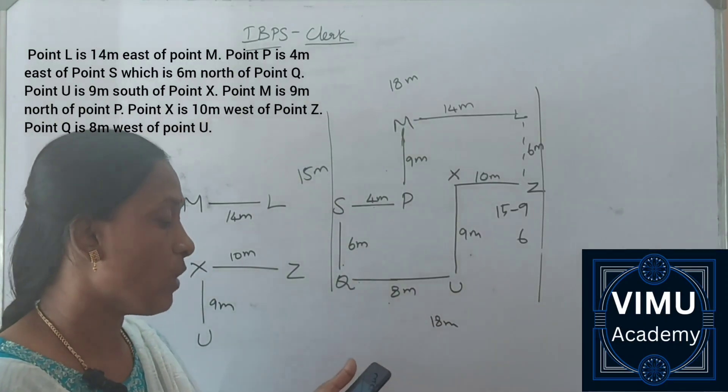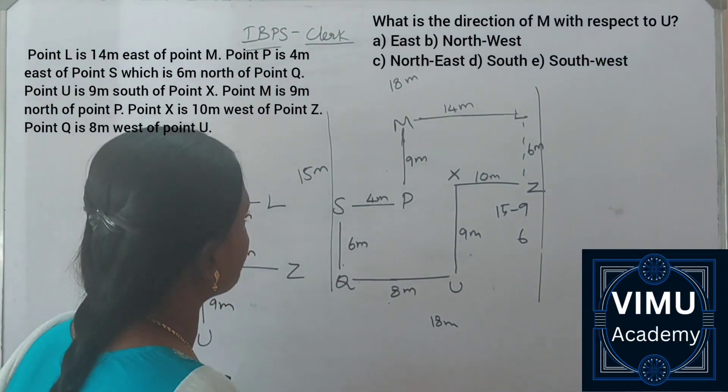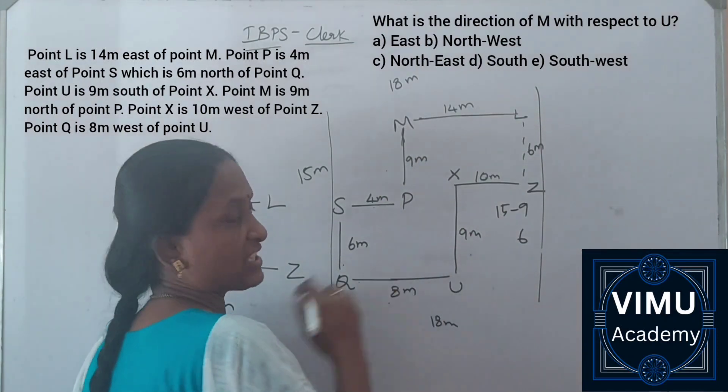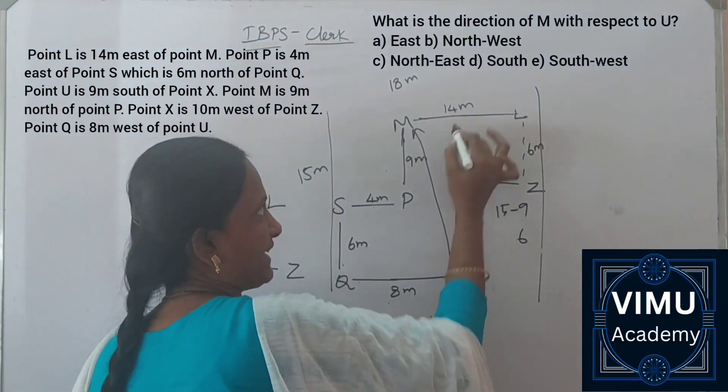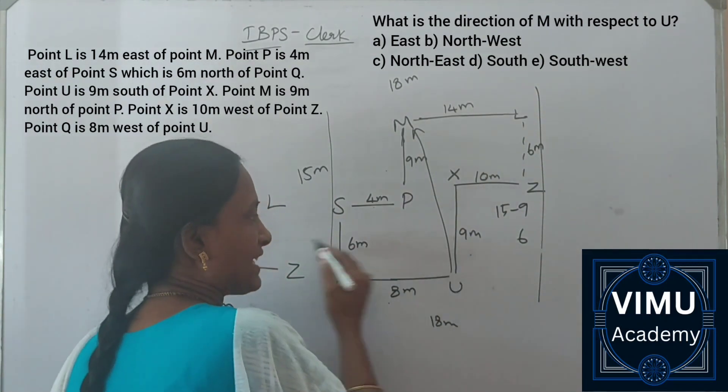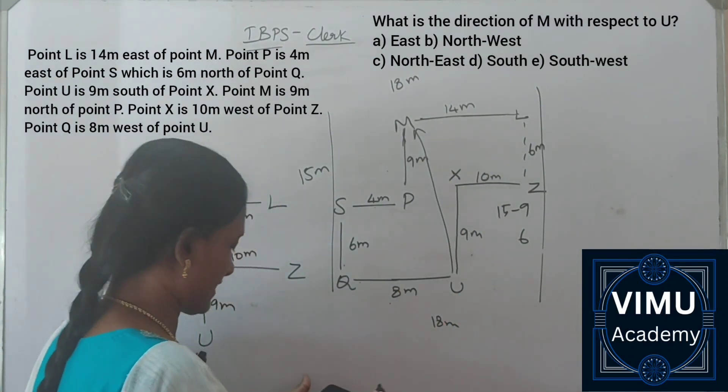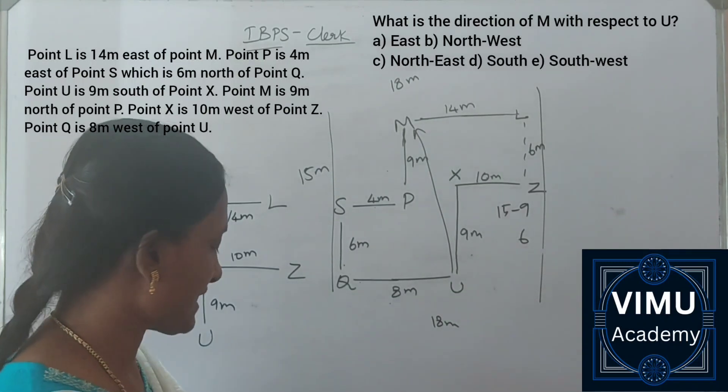Second question: What is the direction of M with respect to U? Looking at the diagram, the straight line goes north and west. In between is northwest. Option D is the answer.